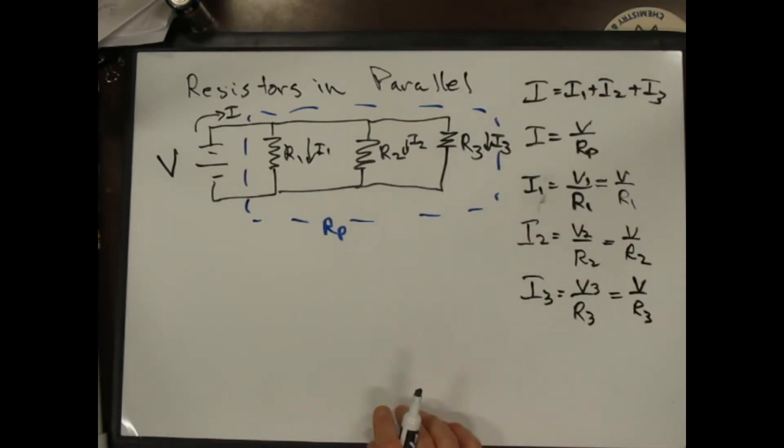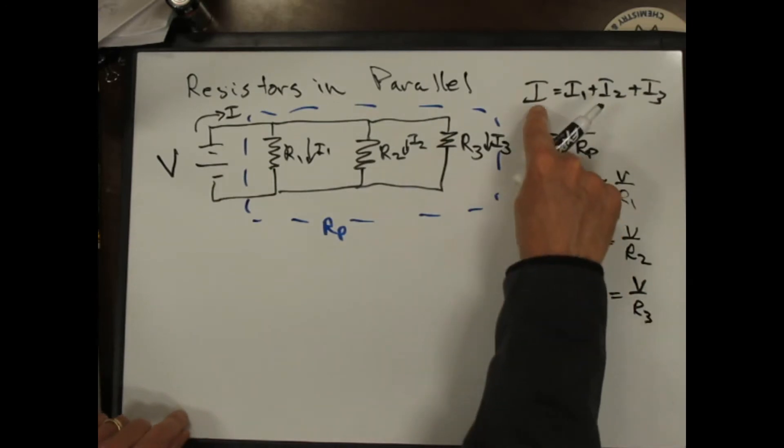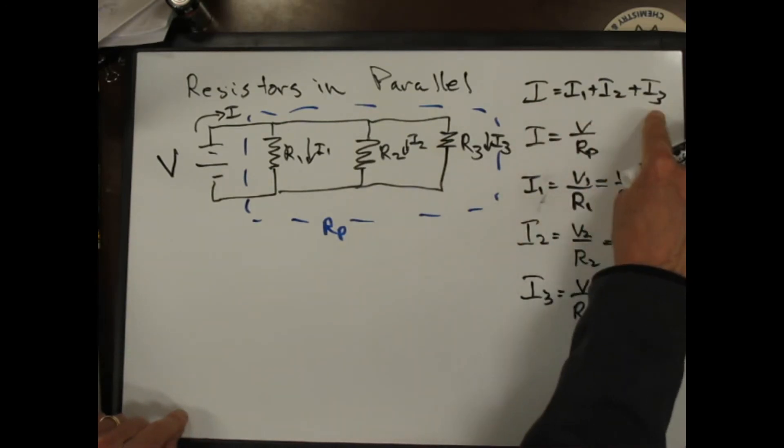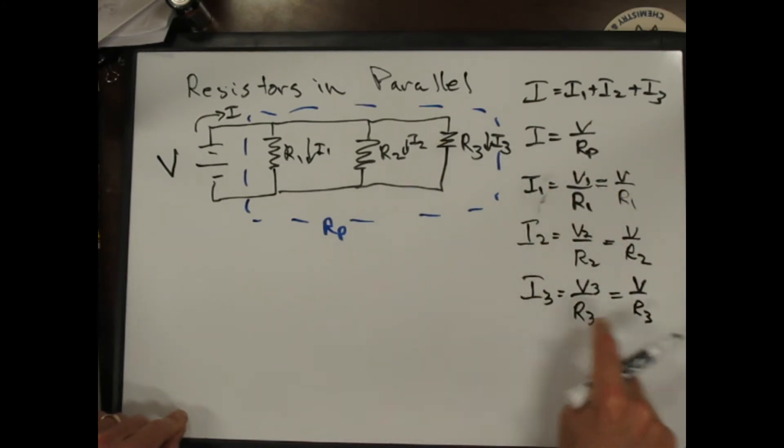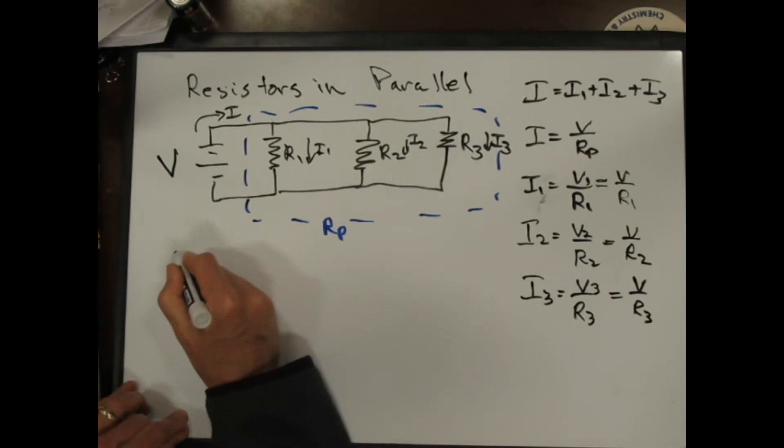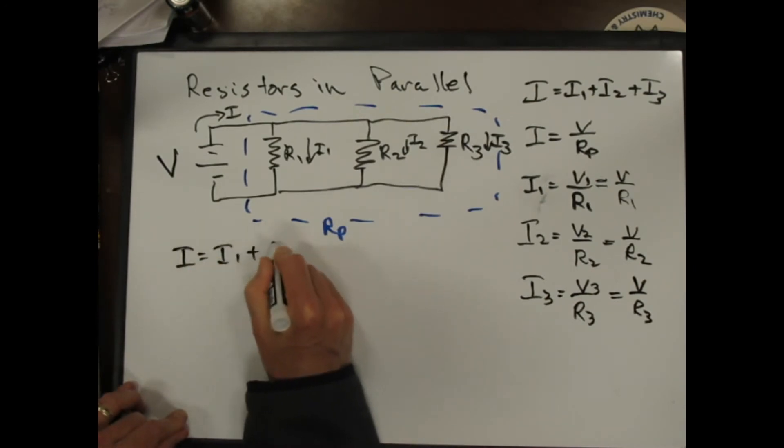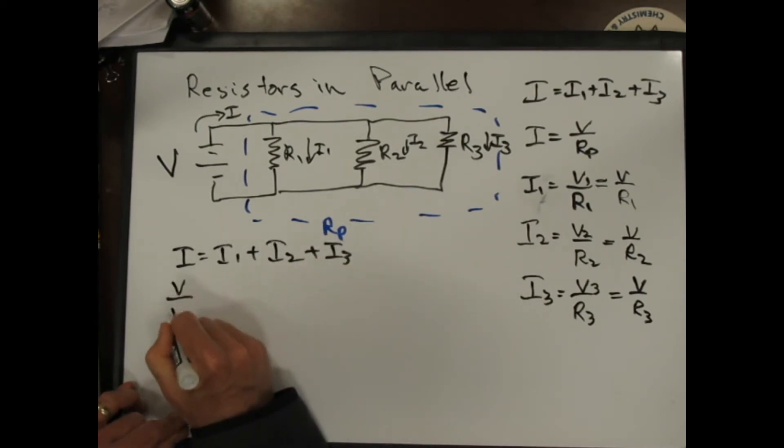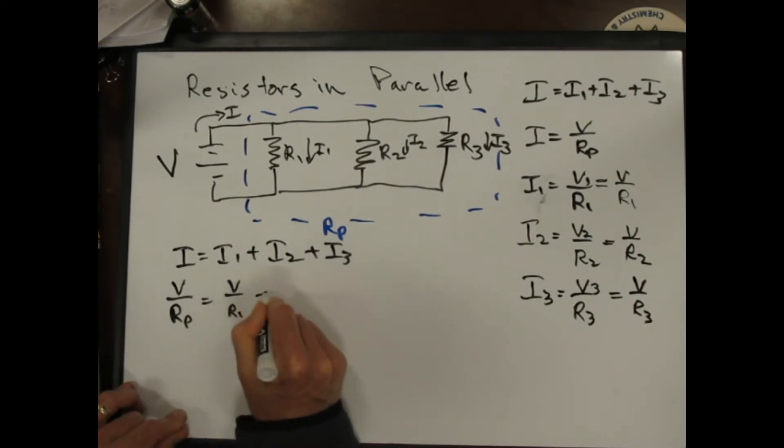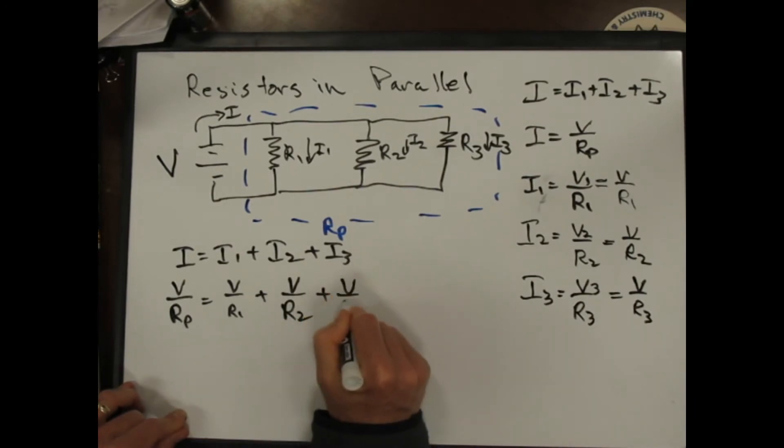If I take all this information, I can say I is equal to I1 plus I2 plus I3, but I'm going to replace I with this guy, and then I1 with this guy, I2 with this guy, and I3 with this guy. So I'll just write it again. I equals I1 plus I2 plus I3. This is the same thing as V over R parallel is equal to V over R1 plus V over R2 plus V over R3.